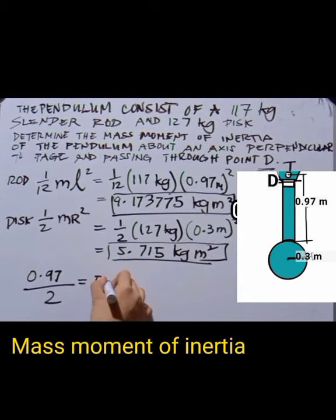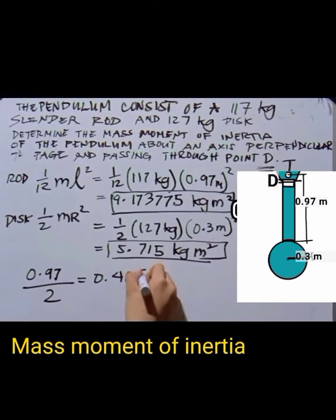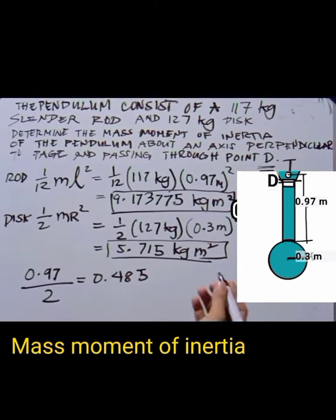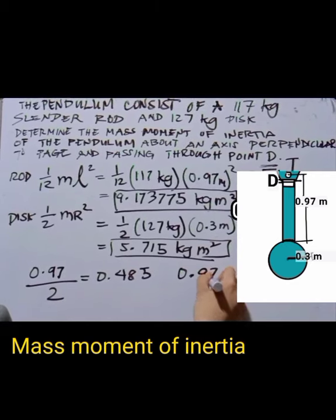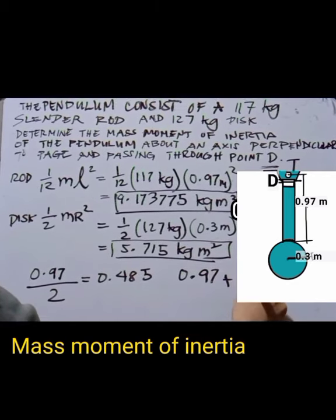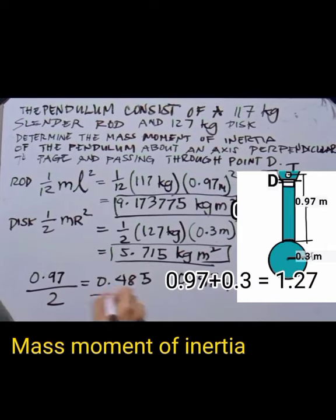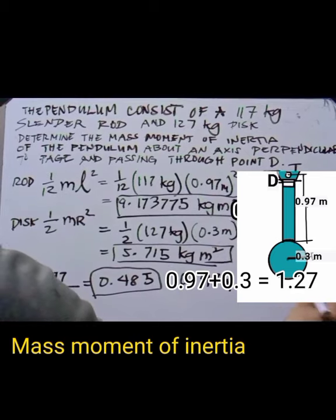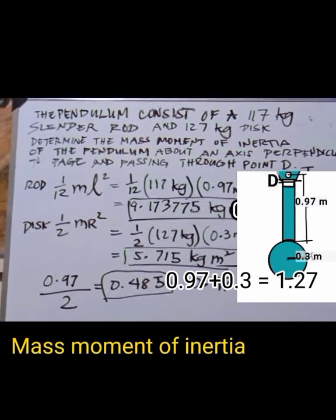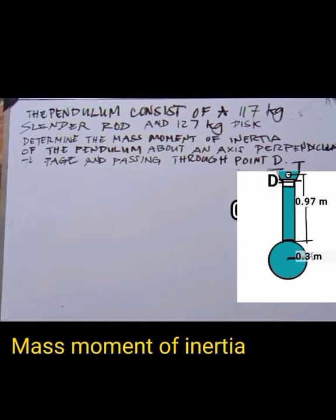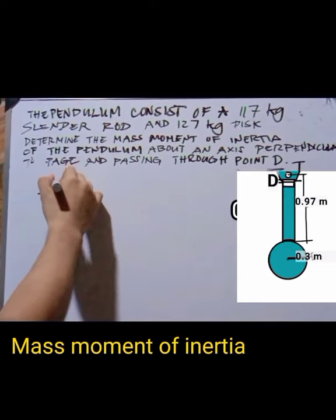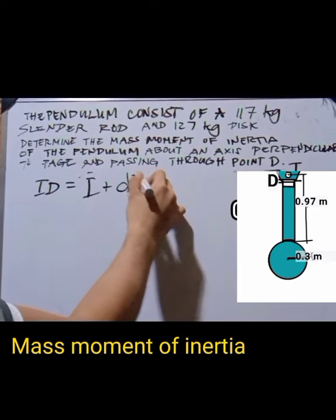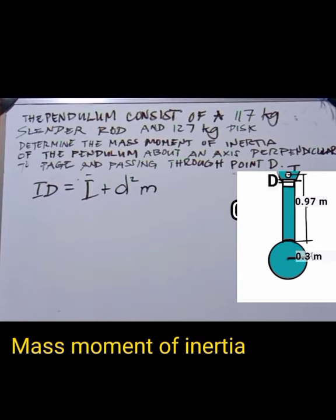We divide 0.97 by 2 to get 0.4485 m (centroid of rod from pivot), and add 0.97 + 0.3 = 1.27 m (distance from pivot to disc centroid). Using the parallel axis theorem, ID = I + d²m.